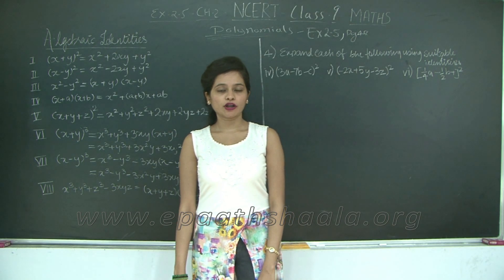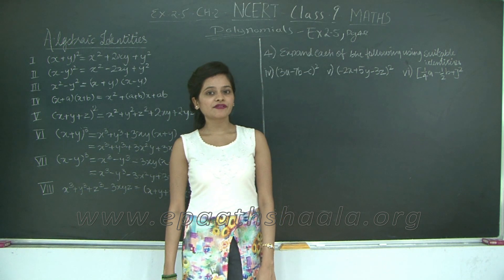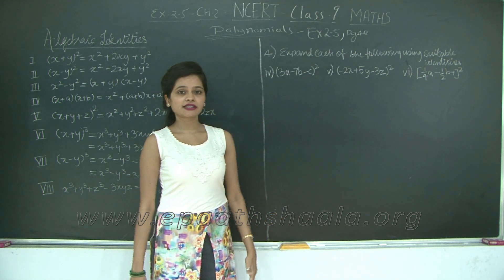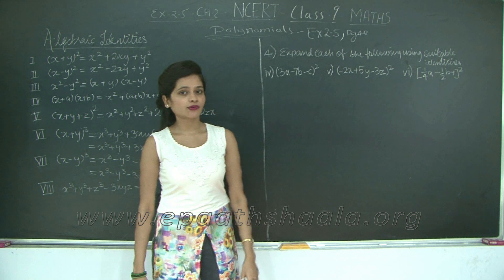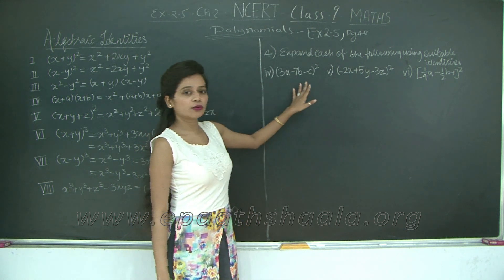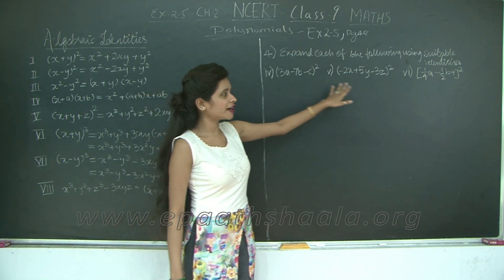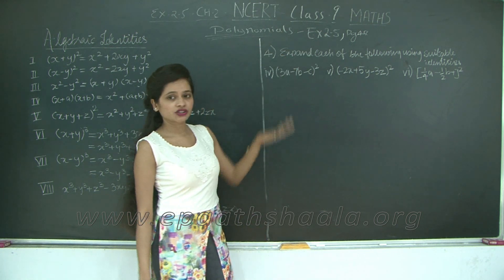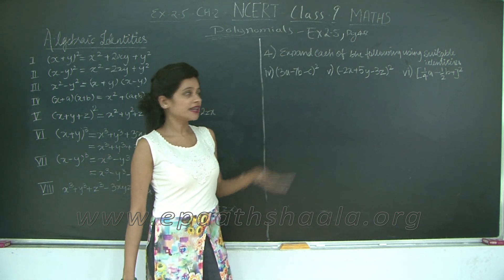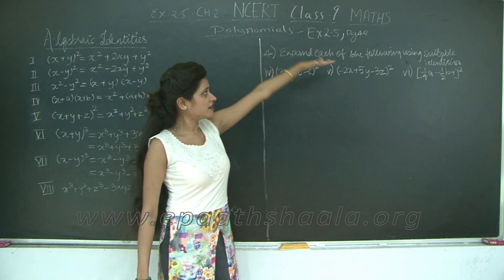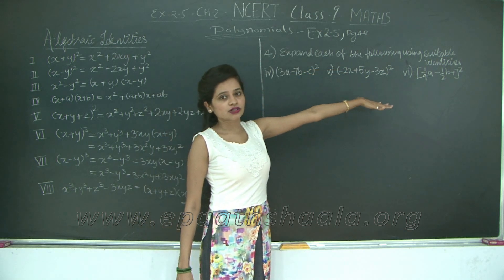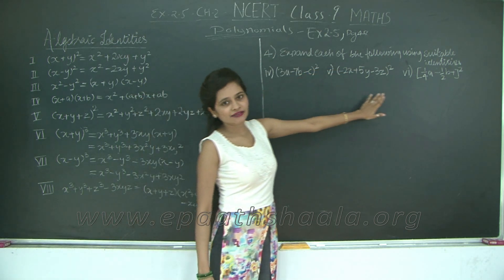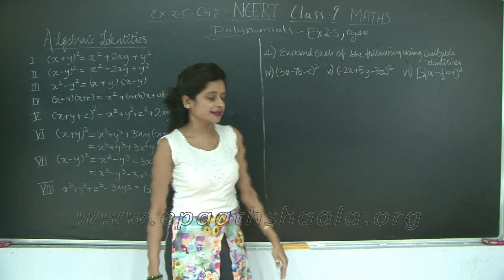Hello students, let's continue with polynomials. In our previous class we were looking at exercise 2.5, wherein we solved the first three sub-questions of question 4. So now we will be looking at sub-questions 4, 5 and 6 of question number 7. We have to expand the following using suitable identities. Here we have given expressions and we have to expand them using our algebraic identities.